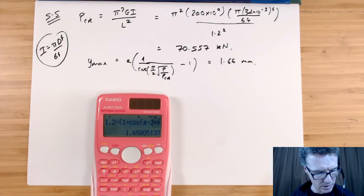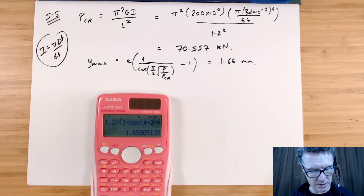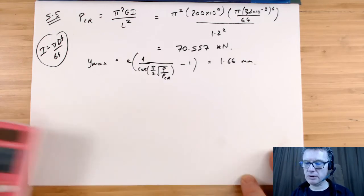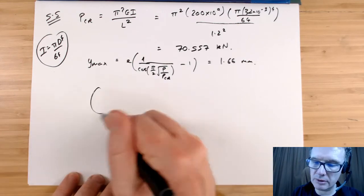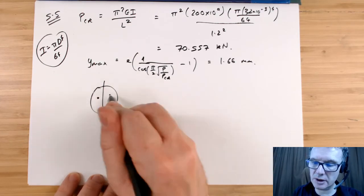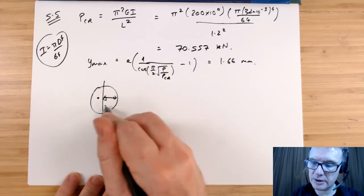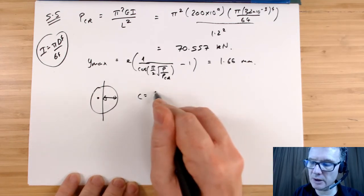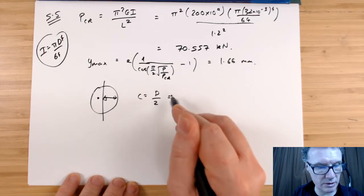Okay, what do you want next? What's the maximum stress in the rod? So look from above, we've applied this force here, slightly off, so what we want is C. So C is going to be half diameter, so C will be half of diameter.